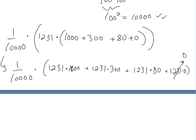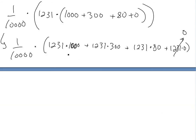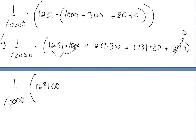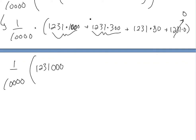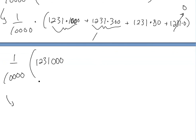Now we can start solving each part. For 1231 times 1000, we just add three zeros, giving us 1,231,000. For 1231 times 300, we pull out the 100 and get 100 times (1231 times 3). We expand 1231 as 1000 plus 200 plus 30 plus one, and then multiply each part by three, giving us 3000 plus 600 plus 90 plus 3.